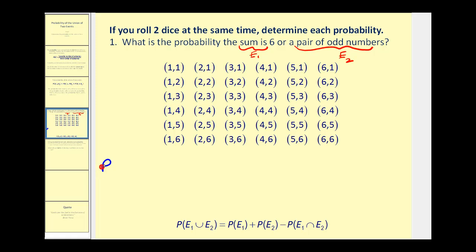So the probability of event one or event two is going to be equal to the probability of event one, plus the probability of event two, minus the probability of event one and event two. The sample space for rolling two dice is listed here. There are 36 possible outcomes.